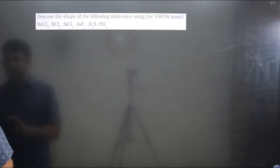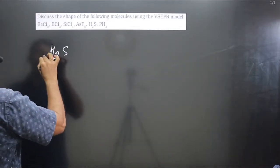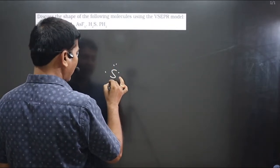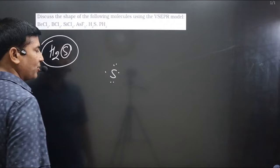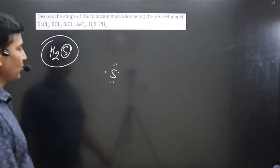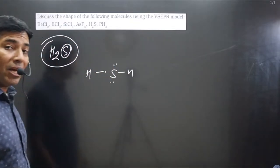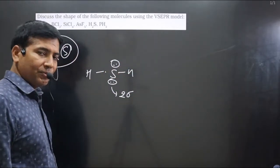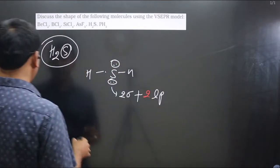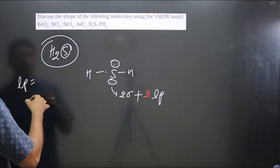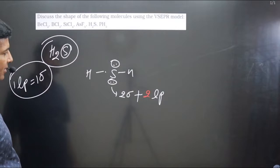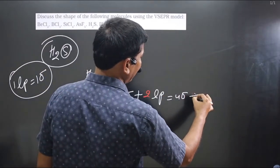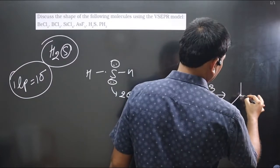Next is H₂S. The central element is sulfur, which is in the oxygen family, 16th group, so it has six valence electrons. Each hydrogen forms a single bond, so we attach one hydrogen here and one hydrogen here. There are two sigma bonds, but importantly, the sulfur also has two lone pairs. When determining hybridization, one lone pair counts as one sigma bond, so two lone pairs plus two sigma bonds equals four — giving us sp3 hybridization.